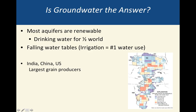Most of our aquifers are what we use for drinking water — about half of the world's drinking water comes from underground aquifers. Unfortunately, water tables are sinking and becoming deeper because we are using water for irrigation. The Ogallala Aquifer in the western United States is used mainly for irrigation, which is why parts of it are basically drying up now.